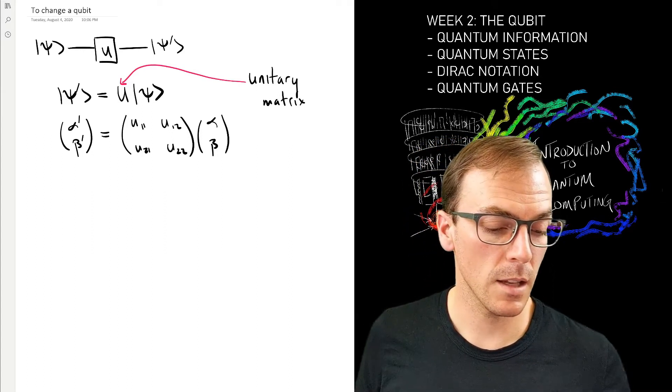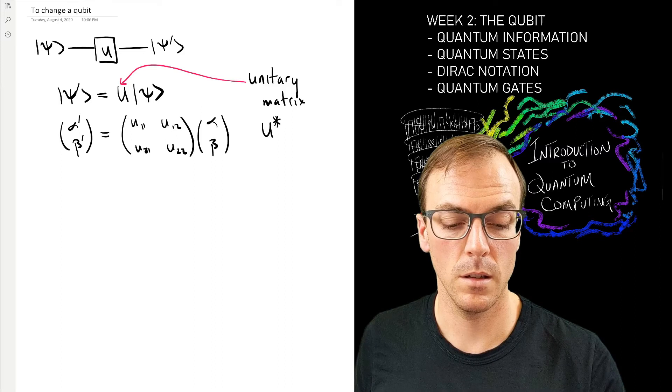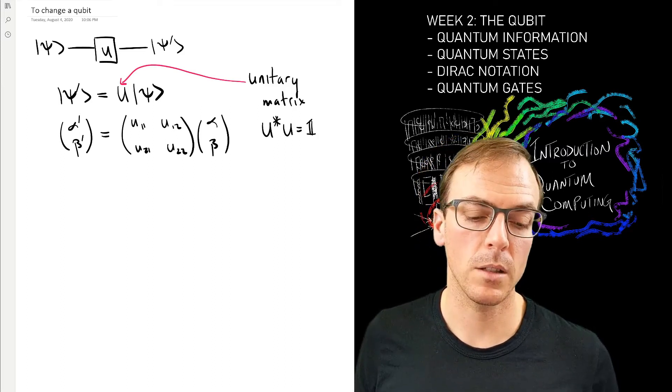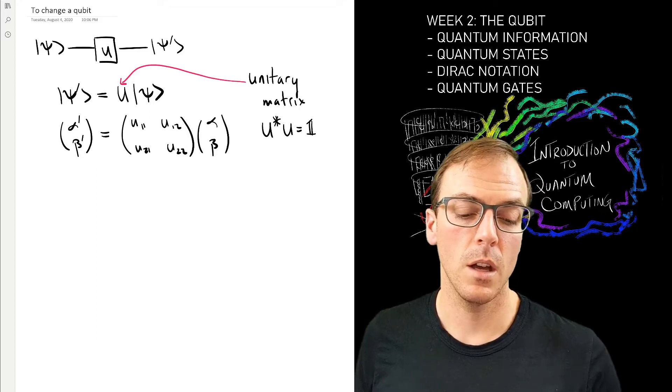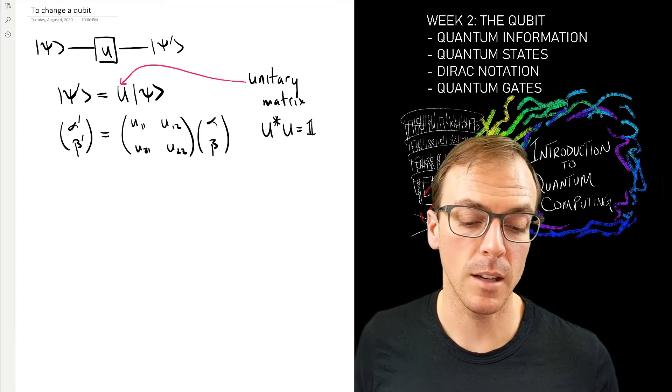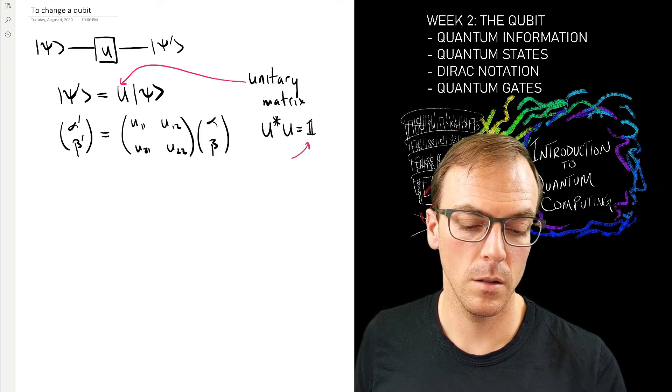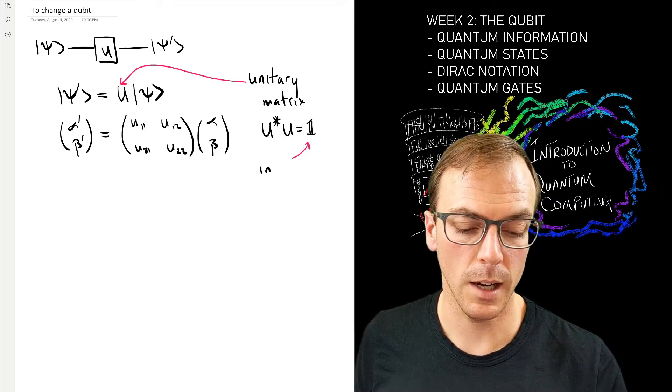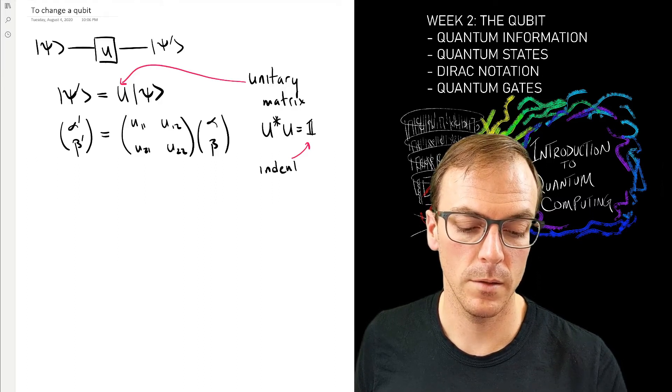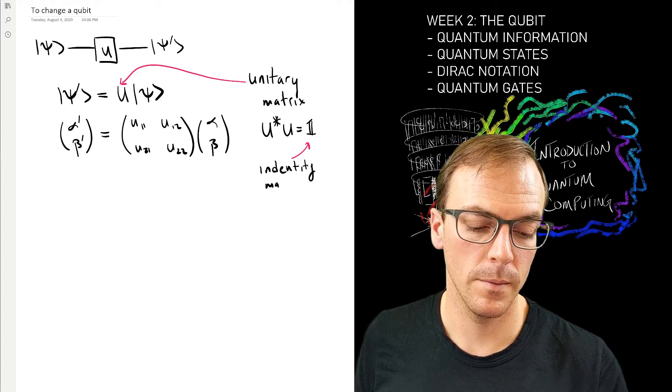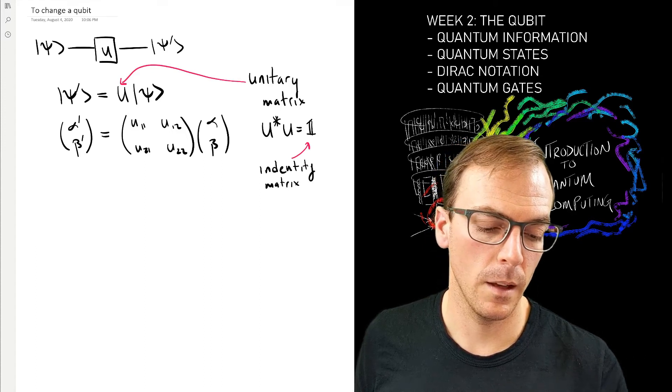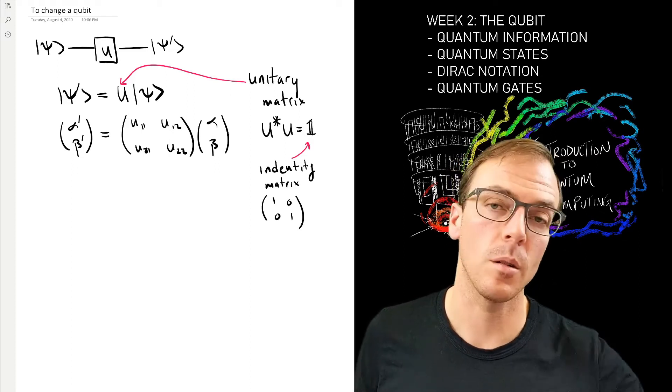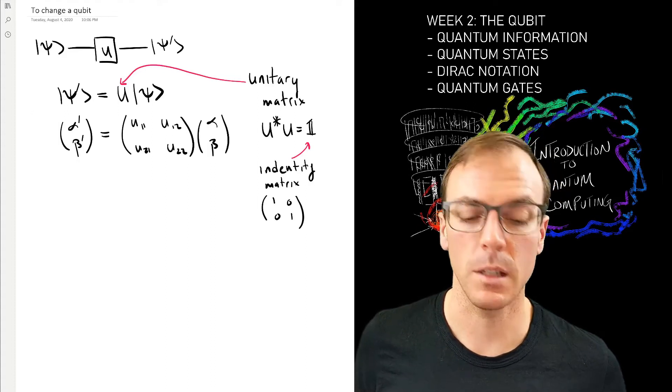That's a matrix that satisfies this equation: I take the complex conjugate transpose and multiply it by the original matrix, and I end up with the very special matrix called the identity matrix, which is one on the diagonal and zeros everywhere else.